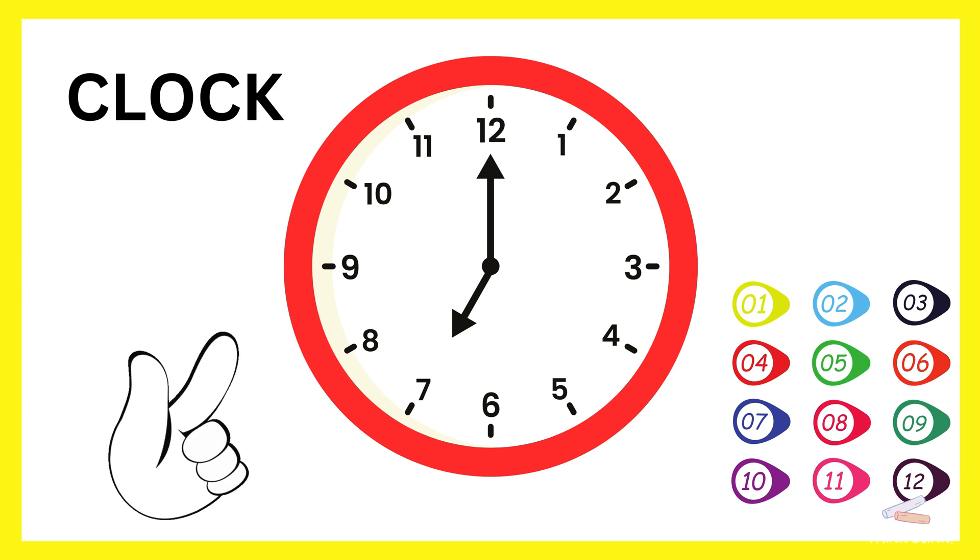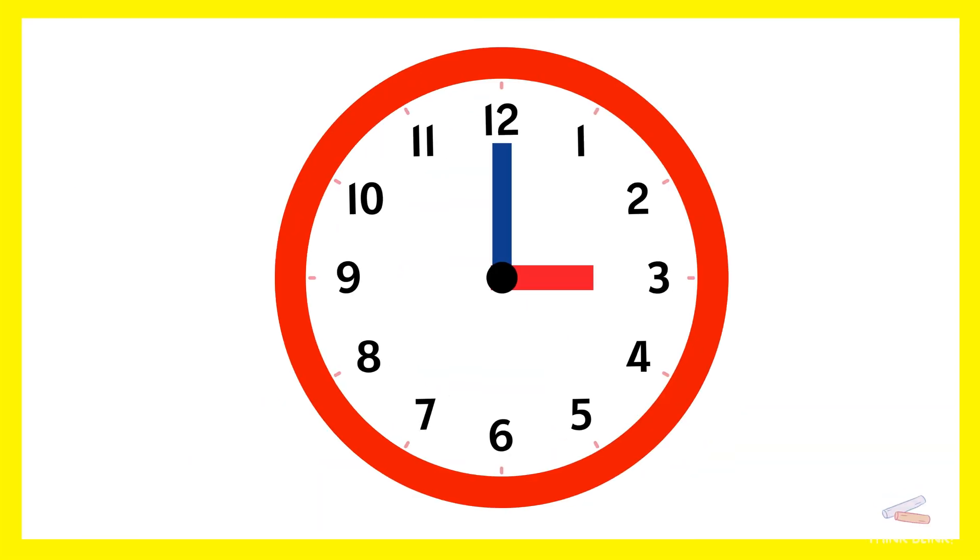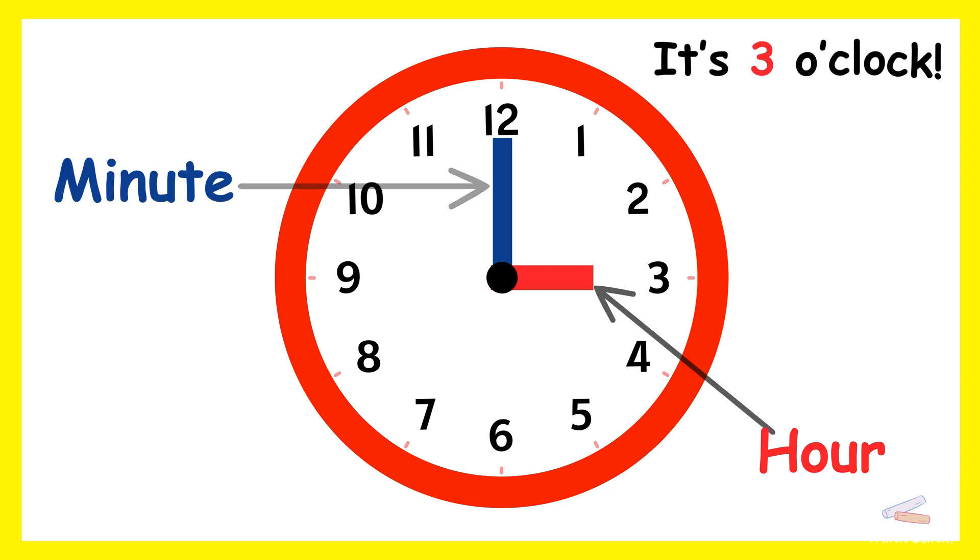Easy, right? The short hand is the hour hand. And the long hand is the minute hand. When the hour hand points at 3 and the minute hand points at 12, it's 3 o'clock.